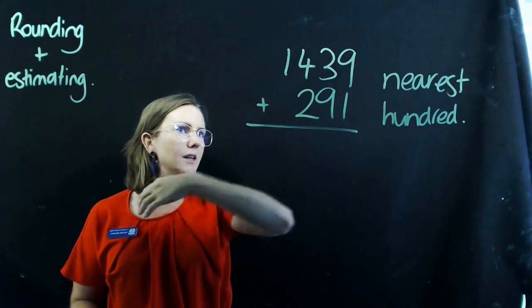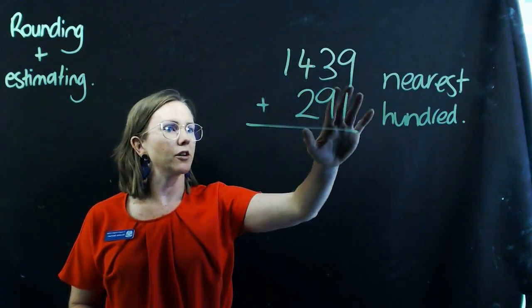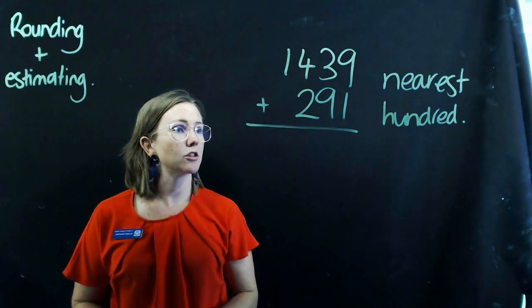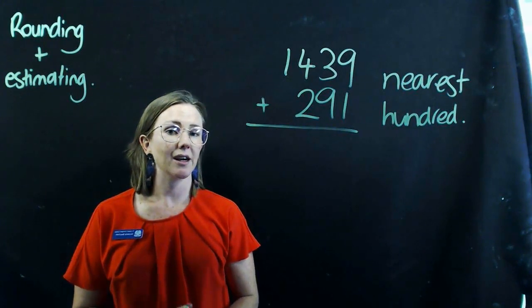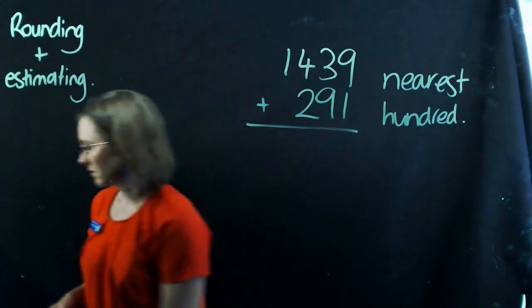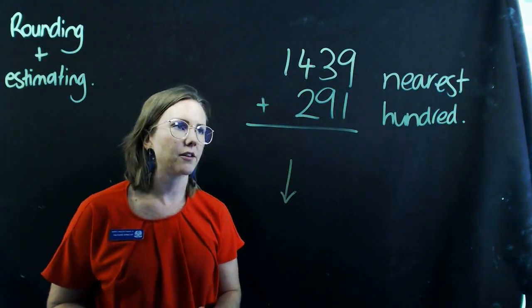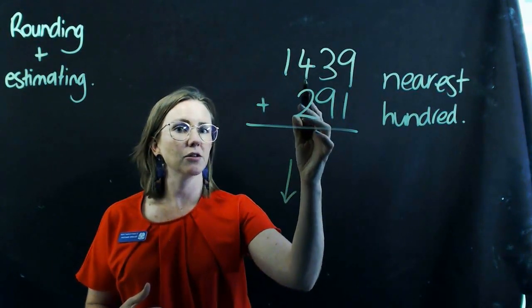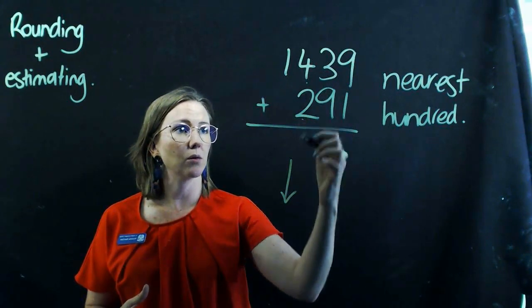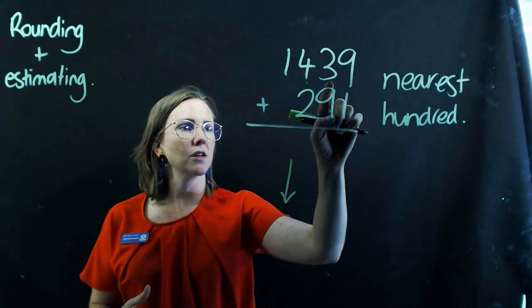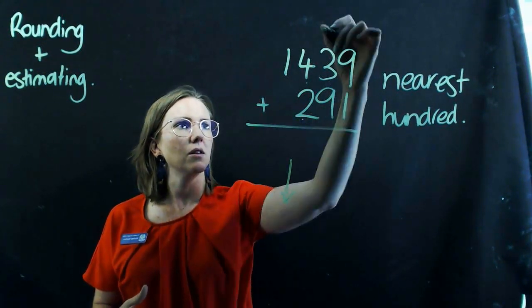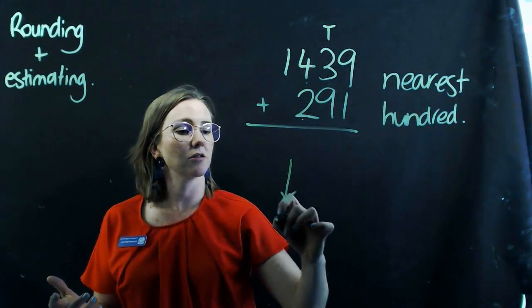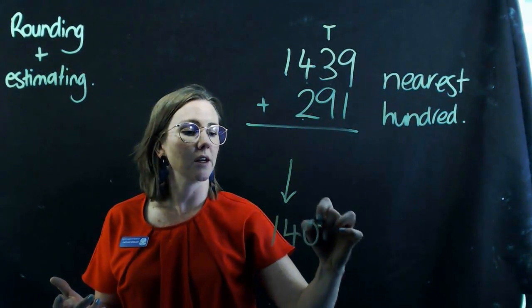So last question for you to try is 1,439 plus 291. And this time again, I want you to round it to the nearest hundred and then estimate your answer. So nearest hundred. Yes, I'm looking at the hundreds column, but I actually need to look down to the tens to work out what to do. So because this is the tens column, this is a 3. It's below 5. So I'm going to round it to the nearest hundred, which makes it 1,400.